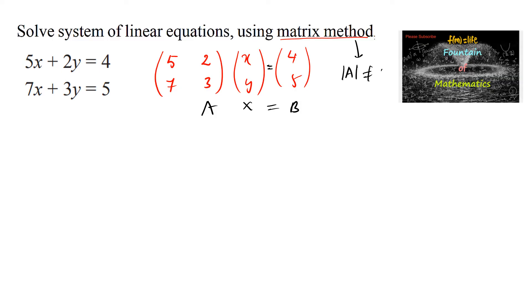We can write X equals A inverse times B, where A inverse equals 1 by |A| into adjoint of A.